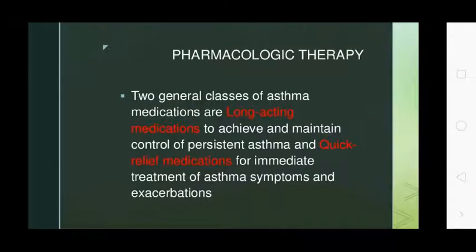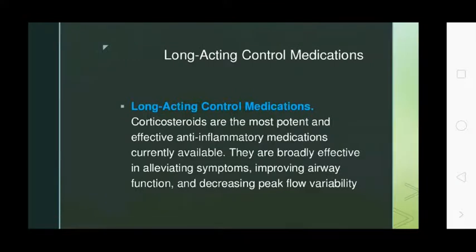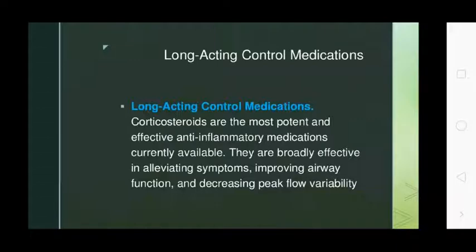Pharmacological therapy: the general classes of long-acting medications are used to achieve and maintain control, while acute relief medications are used for treatment of asthma symptoms and exacerbations. Long-acting control medications include corticosteroids, which are the most important anti-inflammatory medications currently available. Examples include beclomethasone and dexamethasone. Leukotriene modifiers such as montelukast are also strongly effective — they improve airway function and decrease peak flow variability.